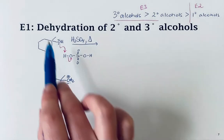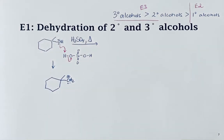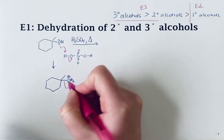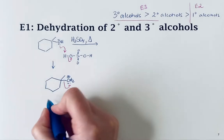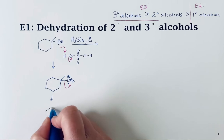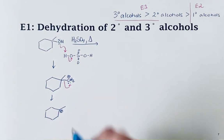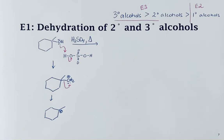This is an E1 reaction with this tertiary alcohol. To start the E1 reaction, the leaving group will leave, and the next step will be to remove a beta hydrogen.